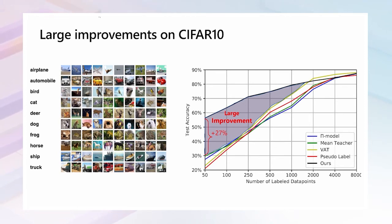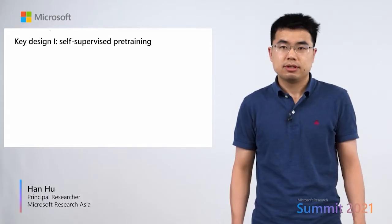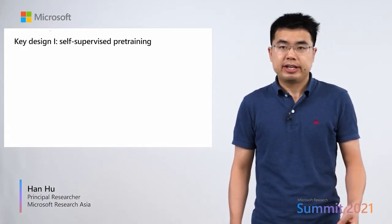Please see the right plot. The x-axis shows the number of labeled samples, and the y-axis shows the test top-1 accuracy. Our approach is absolutely 27% higher than the previous best approaches. In the following slides, I will introduce these two key designs.